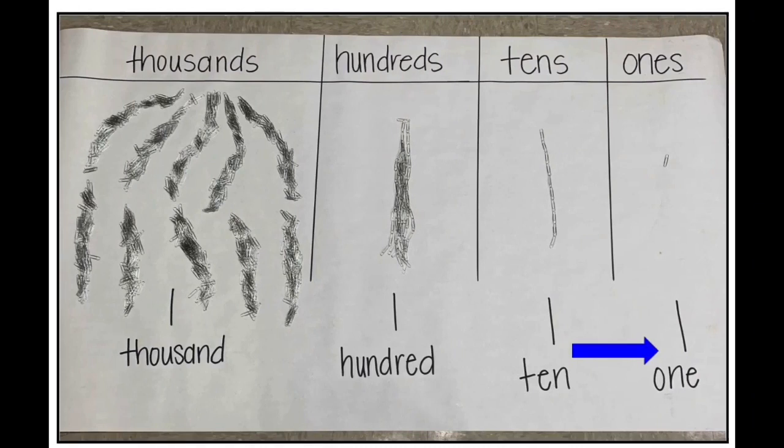Begin with a place value chart. These will be utilized throughout the unit. The value of each place is represented with paperclips, representing the values of ones and tens in this model. The tool is meant to model the 10 to 1 relationship and is intended to bridge understanding as students begin to represent numbers using place value blocks.